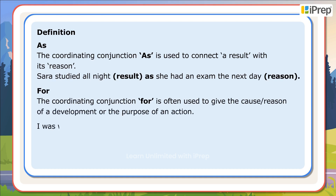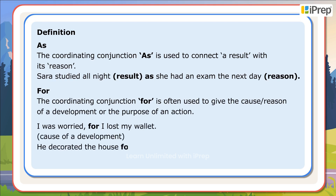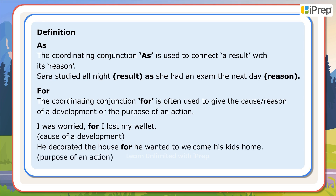The coordinating conjunction 'for' is often used to give the cause or reason of a development or the purpose of an action. For example: I was worried for I lost my wallet — cause of a development. He decorated the house for he wanted to welcome his kids home — purpose of an action. Let's have a look at some sentences.